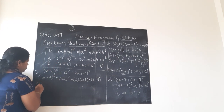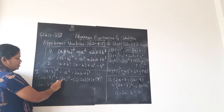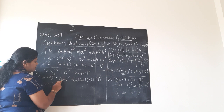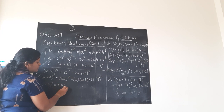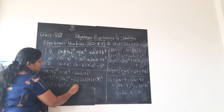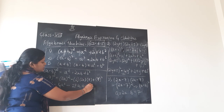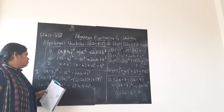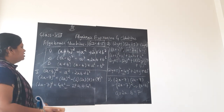Now 2a minus 7 whole square: 2a whole square means the square is applied both to 2 and a. So 2 squared is 4, a squared is simply a squared, giving 4a squared. Minus: numbers first — 2 times 2 is 4, 4 times 7 is 28 — only one variable a, so 28a. Plus 7 squared: 7 into 7 is 49. So the answer is 4a squared minus 28a plus 49. That's all for the third problem.